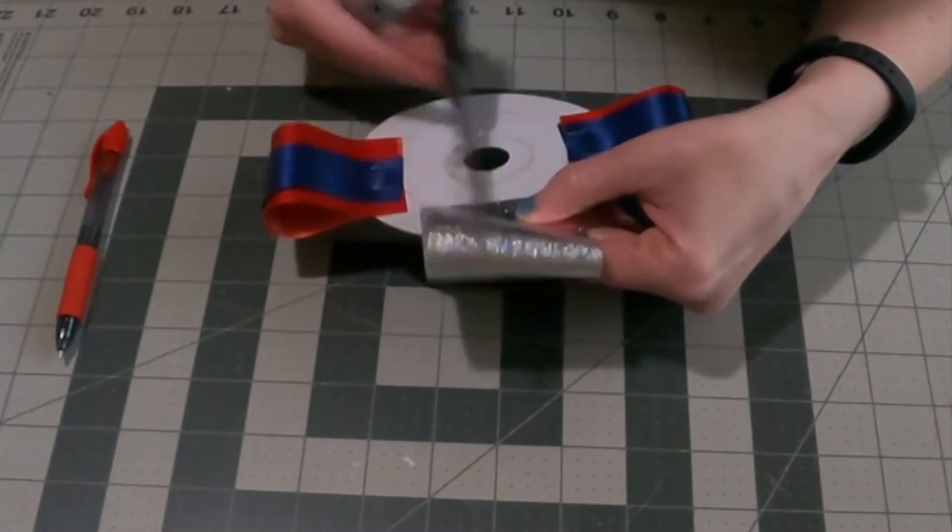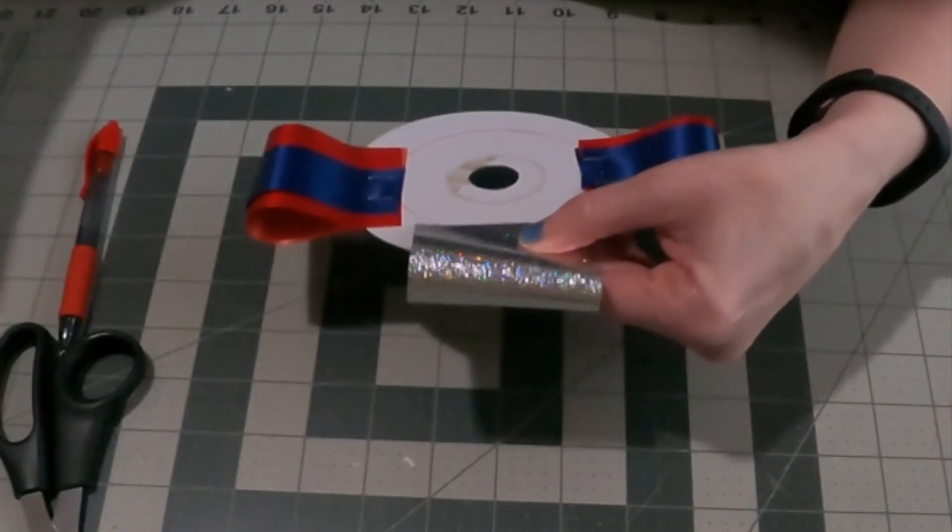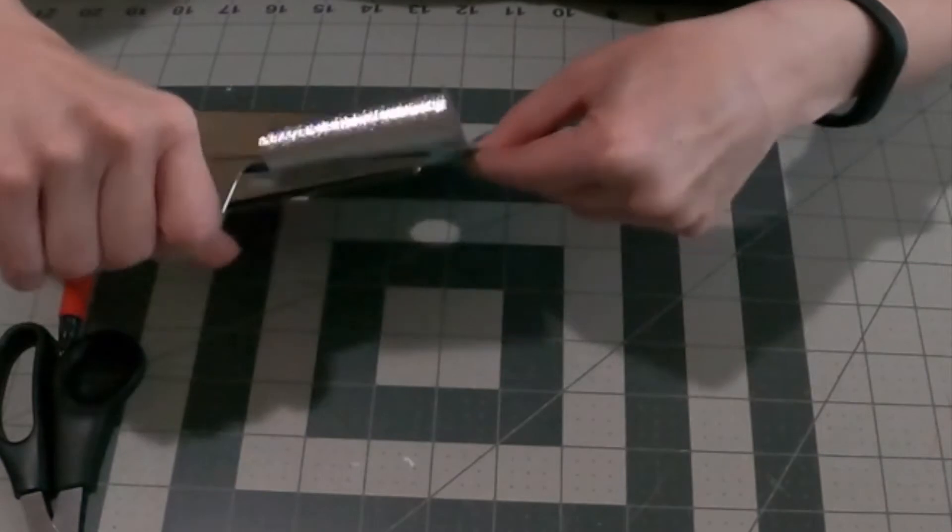So when I do my loops, when I do four loops, I always attach them in a north, south, east, and west fashion. So I go north, south, and then east and west.